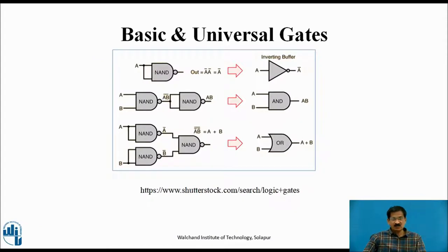These are the symbols and output expressions for the basic and universal gates. On the top left is the NOT gate — an inverting buffer. Input is A, output is the complement of the input, that is A-bar. The next gate is the AND gate, also a basic gate. Inputs A and B, output is A dot B — the Boolean expression for the AND gate is Y equals A dot B.